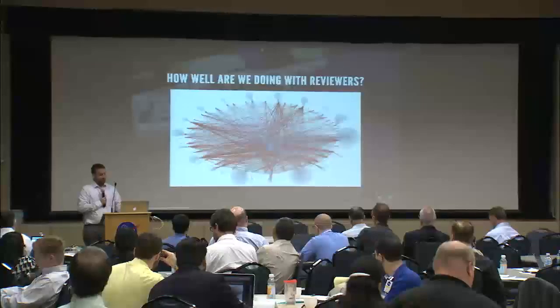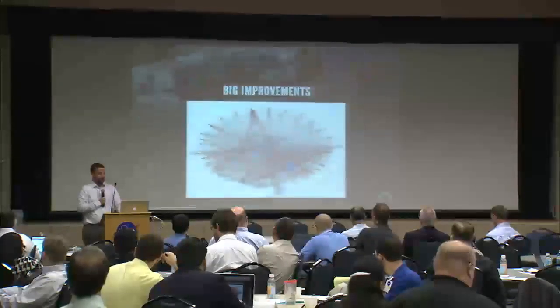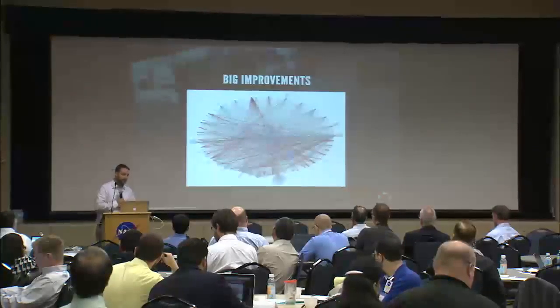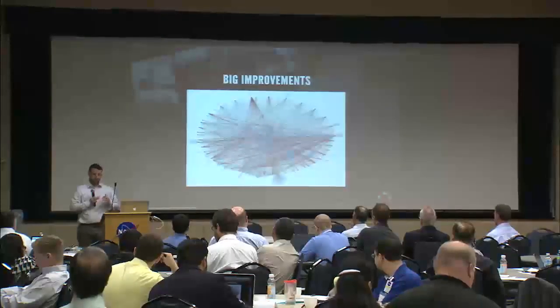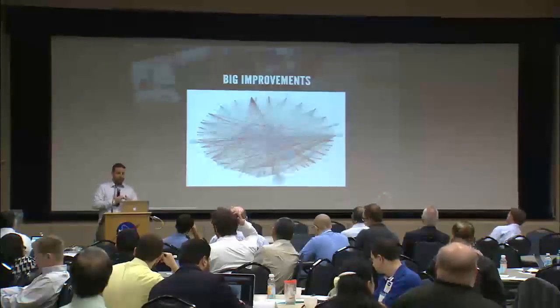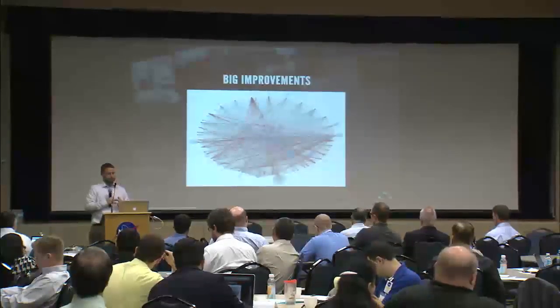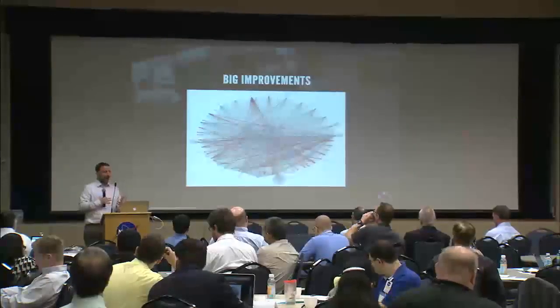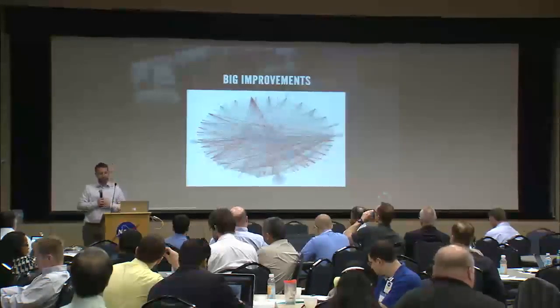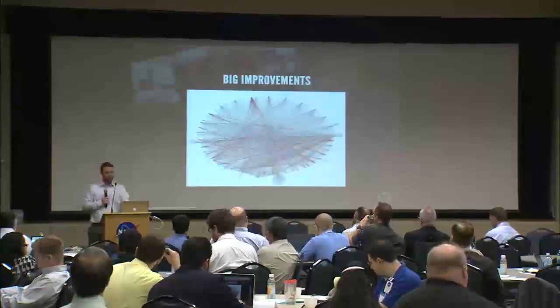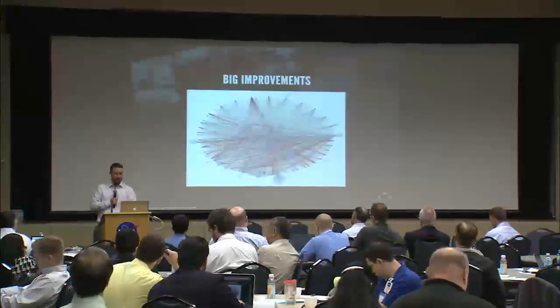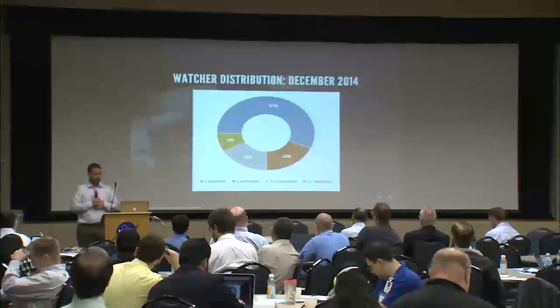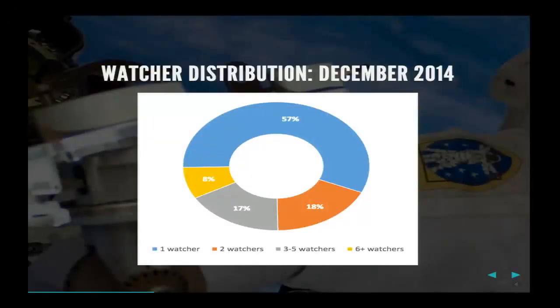Going back to the network graph: you can clearly see the red is reduced, which is good. The other thing that's reduced is those big clusters around the outside — singly-watched pages. We wanted to get people watching more pages. Those pages watched by just one person needed to get into other people's lists, and you can see a big improvement. In December of last year, 57% of pages were watched by just one person, which was not good.